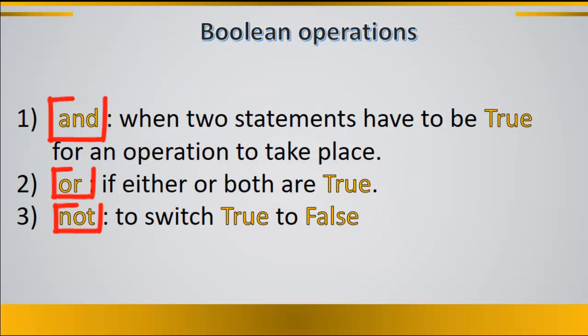There are Boolean operations — 'and', 'or', and 'not' — which can be used in conditions. You use the 'and' operator when two statements both have to be true for an operation to take place. The 'or' operator is used if either or both conditions are true. If you want to switch between true and false statements, you can use the 'not' operator.